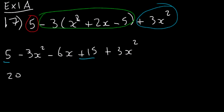Going to be 20. And let's go for the next one: -3x² plus 3x² will be 0, so nothing to write there.